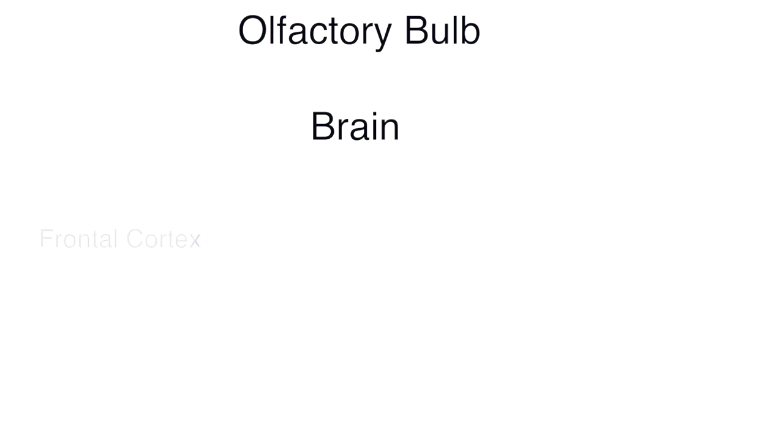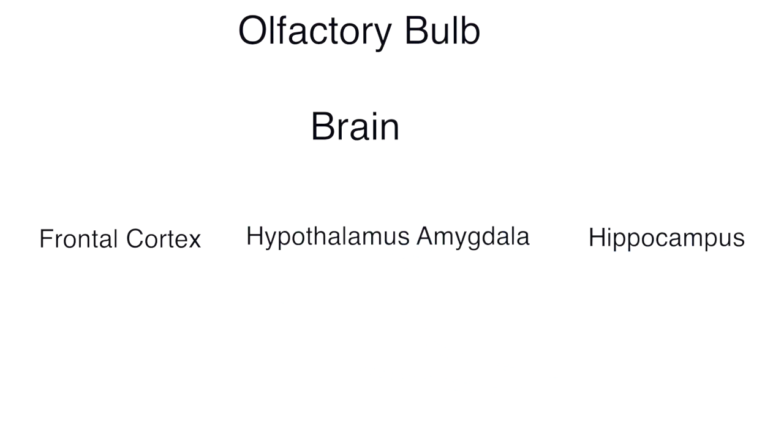The first one is the frontal cortex region, the second region is the hypothalamus-amygdala, and the third one is the hippocampus. The frontal cortex functions as the conscious perception of the smell.